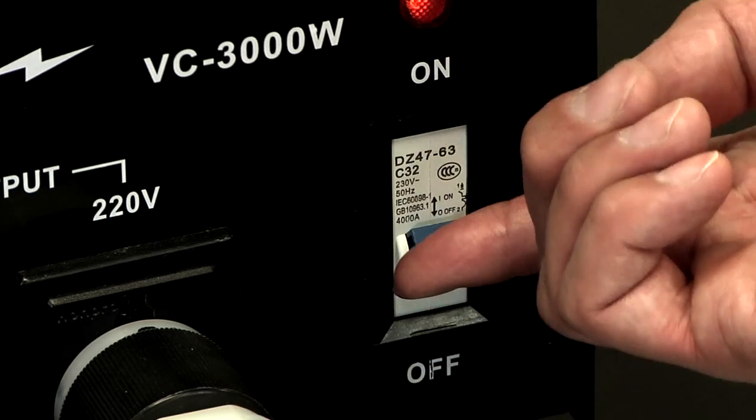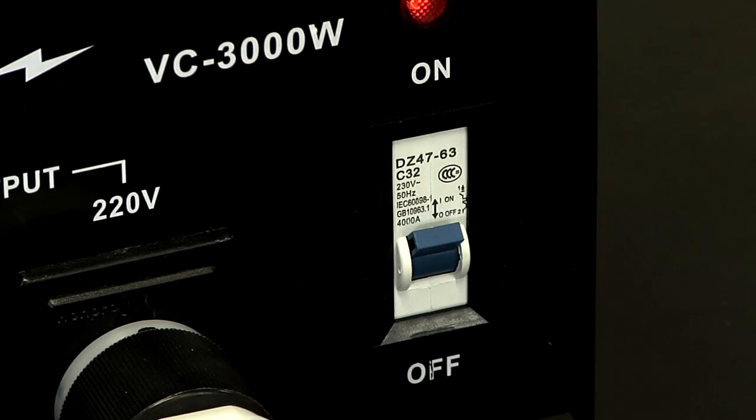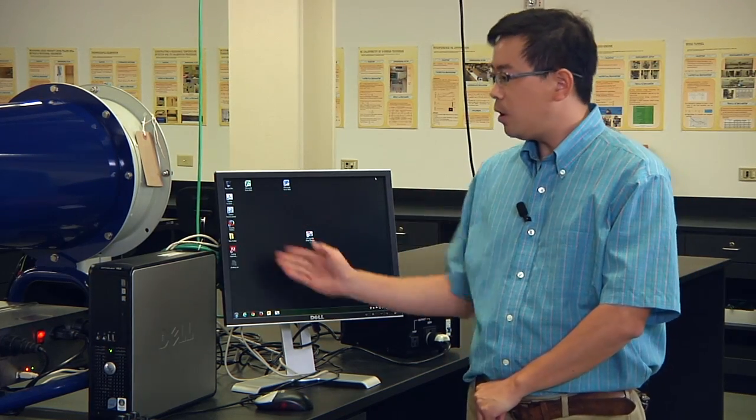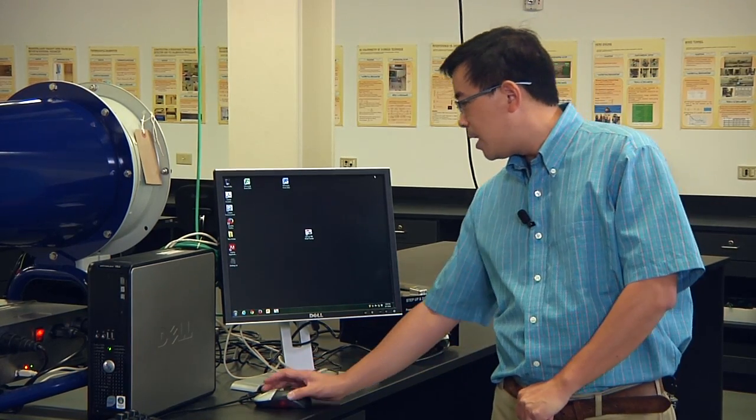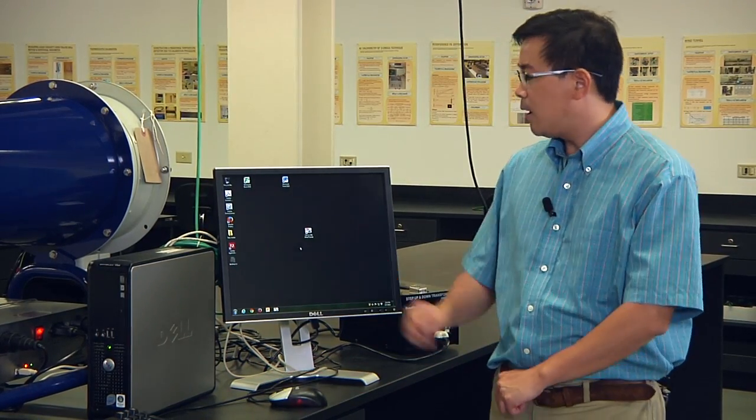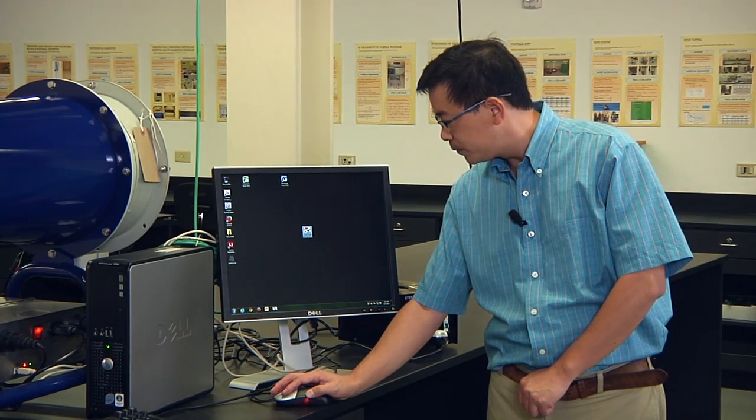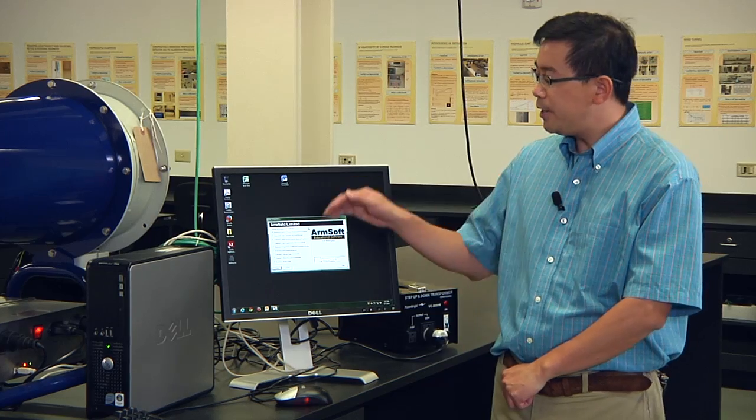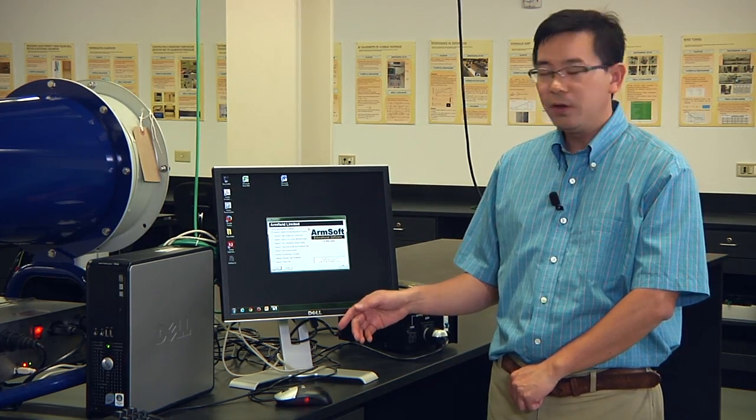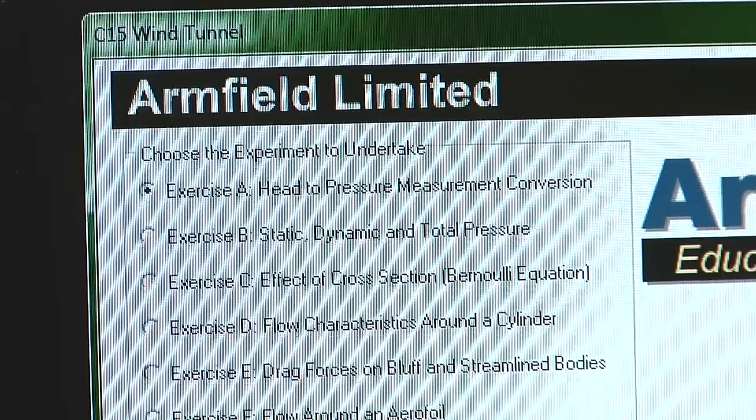Switch up to supply the power to the wind tunnel. Then come to the computer. The computer has installed software with hardware with the wind tunnel. The communications have all been connected. You just need to log into your account and click on the icon in the middle of the desktop. You will see a list of accesses. We pick up the first one, access A.